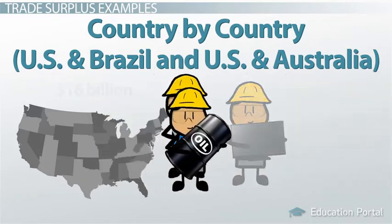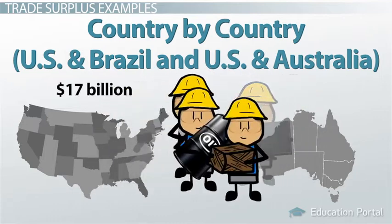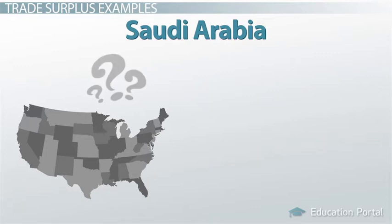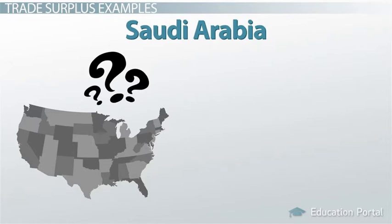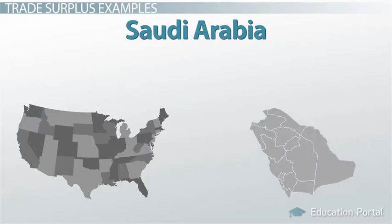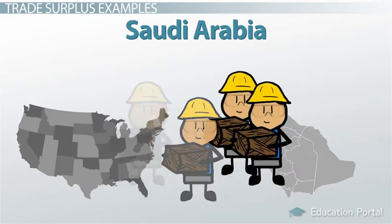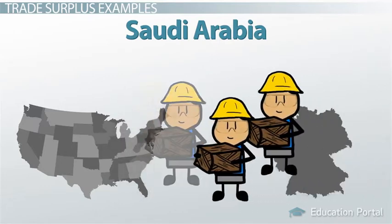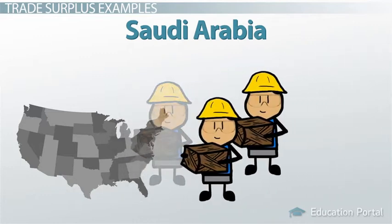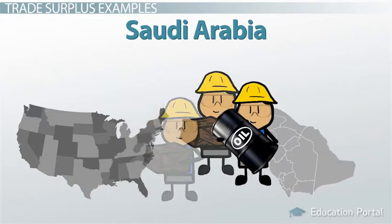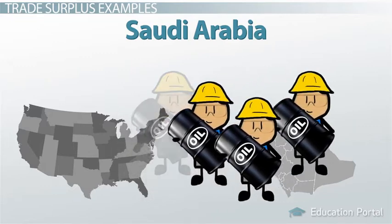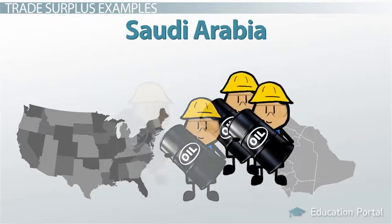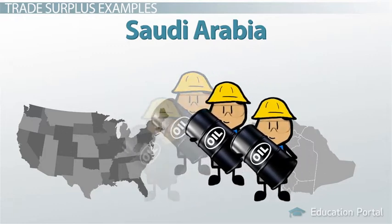The US had a similar surplus with Australia at approximately $17 billion in 2013. Saudi Arabia has consistently had one of the largest trade surpluses in the world. In 2011, their surplus was roughly $250 billion. Germany was close behind at roughly $220 billion. Nearly 90% of all Saudi export earnings come from the oil industry. With nearly 20% of the world's petroleum reserves, Saudi Arabia is able to sell and export huge quantities of oil to many of the industrialized nations that rely heavily on it for their way of life.